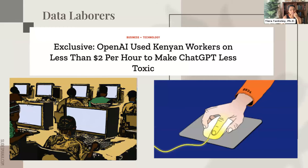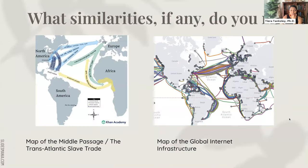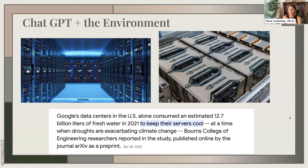We talked about the larger context of these technologies — click workers, OpenAI using Kenyan workers to make ChatGPT less toxic. We looked at a map of the transatlantic slave trade alongside a map of global internet infrastructure and asked: are there similarities? We also talked about ChatGPT's massive water consumption and carbon footprint. Students were stunned — they thought ChatGPT existed in the sky and didn't know there were actual warehouses with servers drinking water during a drought.